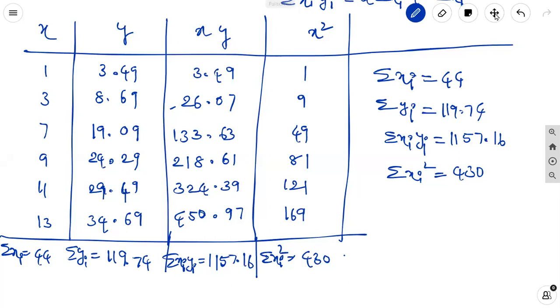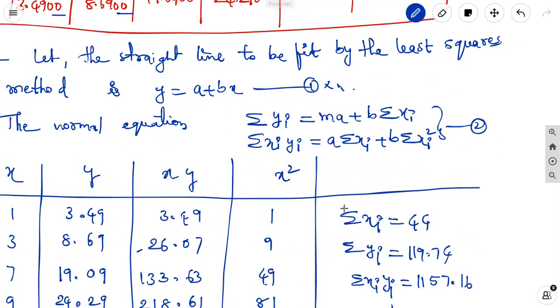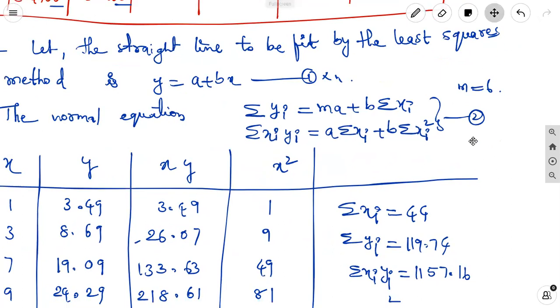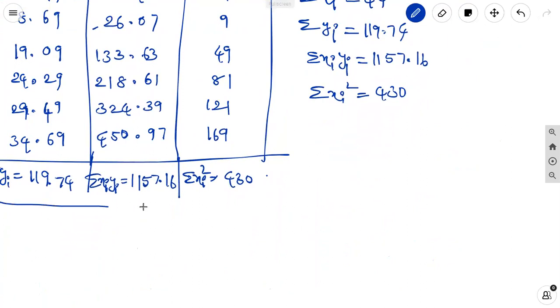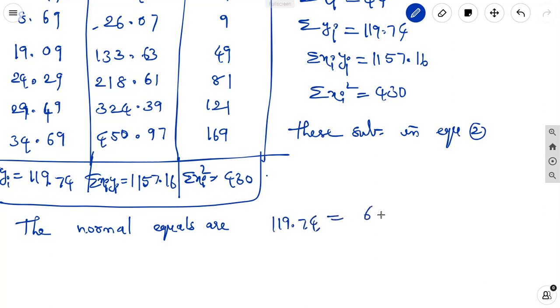These values substitute in the normal equations. Those normal equations are, let it be equation 2, in that substitute sigma y 119.74 equal to, here m equal to 6 values, so 6a plus b into sigma xi is 44. Sigma xi yi equal to 6a plus 44b. Sigma xi yi means 1157.16 equal to 44a plus 430b. This is equation 3, that is equation 4.